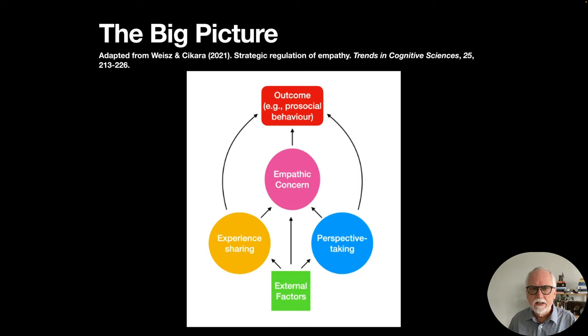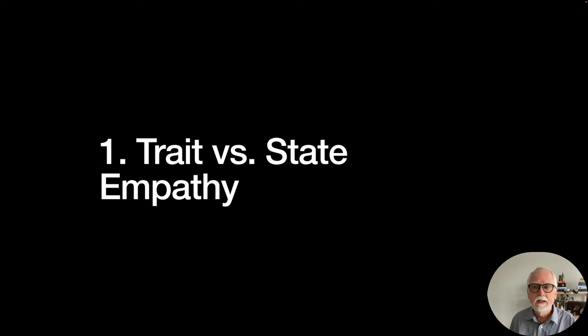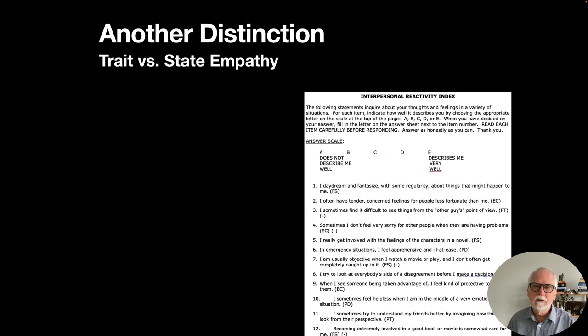When I say external factors, I'm talking about things external to the person. As you move around in the world there are things that attract your attention and focus your empathy, but external factors might also include things about your internal dispositions — your traits. There is a distinction in the empathy literature between trait and state empathy. Trait empathy is the idea that you may be chronically high or low in empathy.